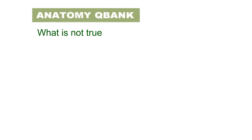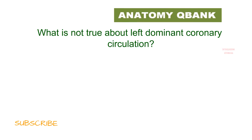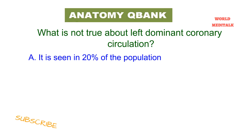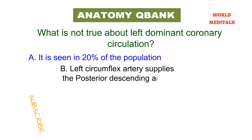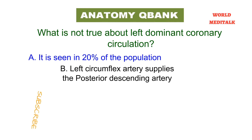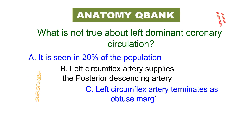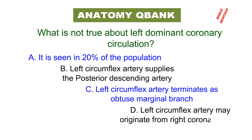What is NOT true about the left dominant coronary circulation? A: it is seen in 20 percent of the population. B: left circumflex artery supplies the posterior descending artery. C: left circumflex artery terminates as obtuse marginal branch. D: left circumflex artery may originate from right coronary sinus. Pause the video and think about the answer.